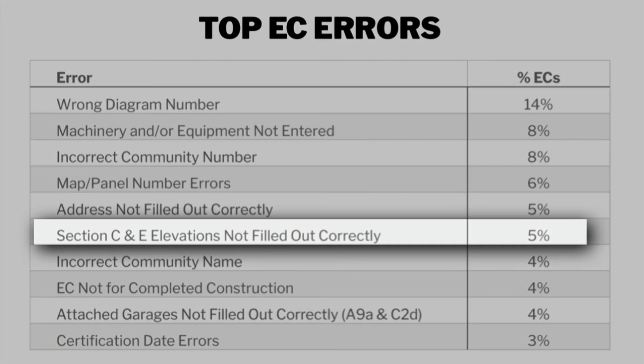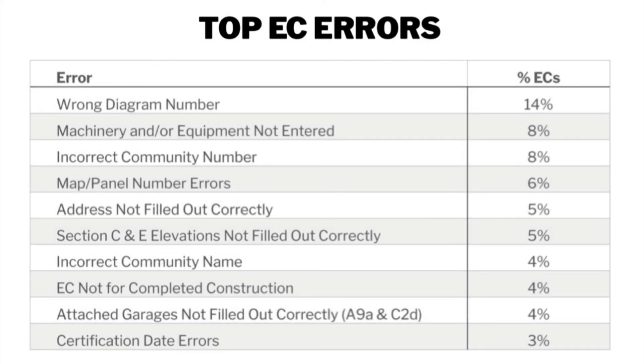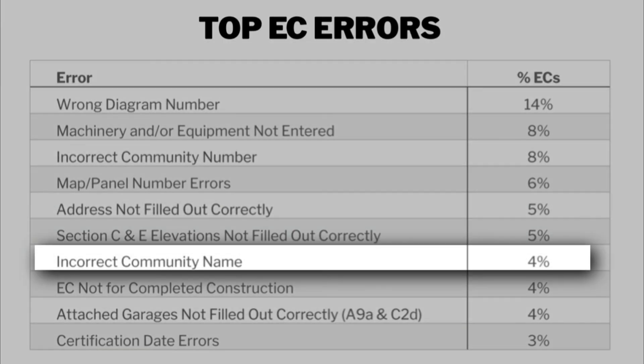For Section C and E elevations not filled out correctly, almost always return it to the surveyor for Section C elevations and to the property owner for Section E to have them redo the form. You could provide your own elevations from an in-house professional or hire one, but really try to get the original certifier to make these changes. The incorrect community name is another easy fix — change it with a memo of correction or a comment in Section G.